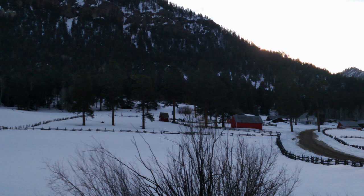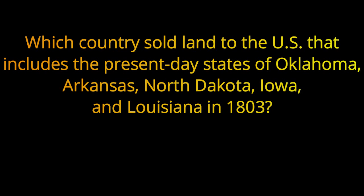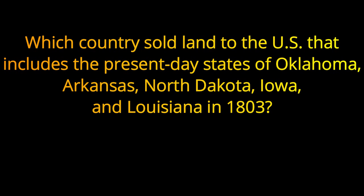Question 20. Which country sold land to the U.S. that includes the present-day states of Oklahoma, Arkansas, North Dakota, Iowa, and Louisiana in 1803? The answer is the country of France.